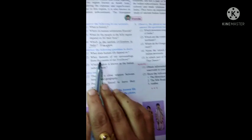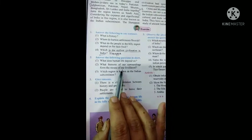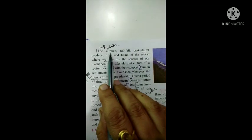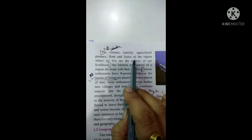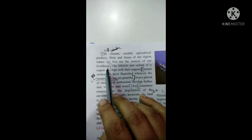Question 2.2: What features of our surroundings form the means of our livelihood? This answer you will get on page number 2. The climate, rainfall, agricultural produce, flora and fauna of the region where we live are the sources of our livelihood. This is 2.2.